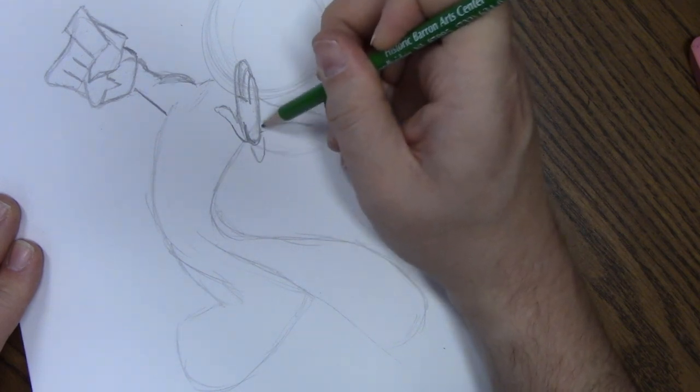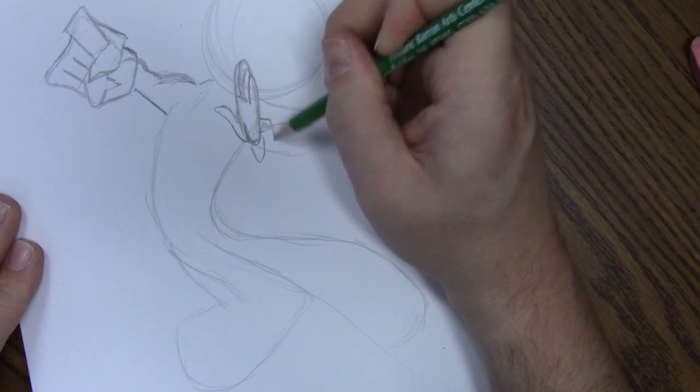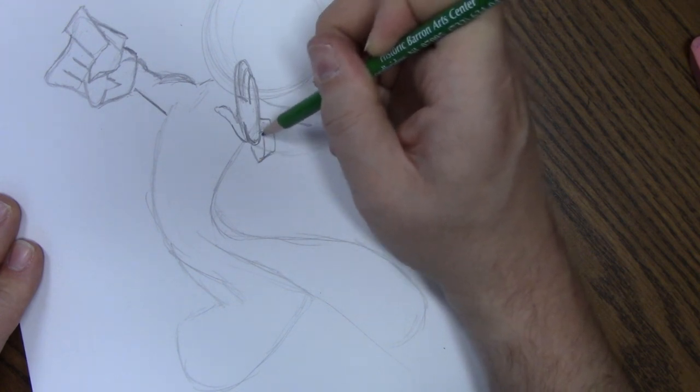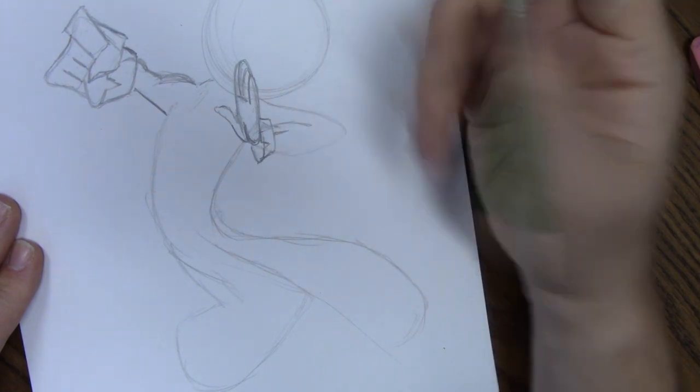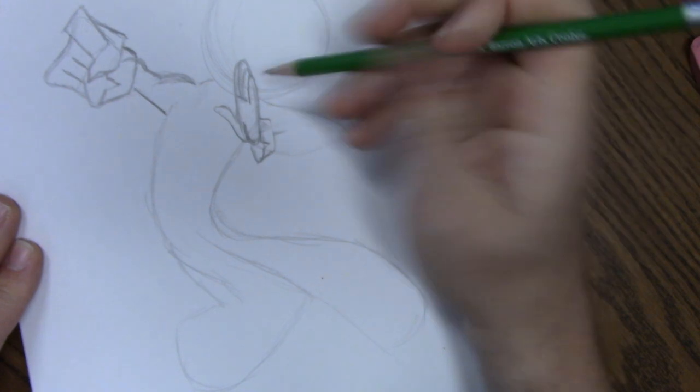Same thing, she's going to have like this reverse cuff glove with a notch in it. And then this is going to be her forearm. Let's clean up this shape a little bit. It's going to taper outwards towards the elbow.